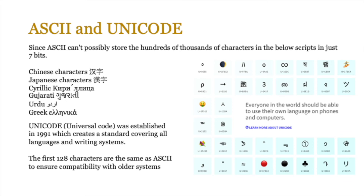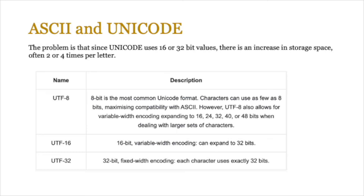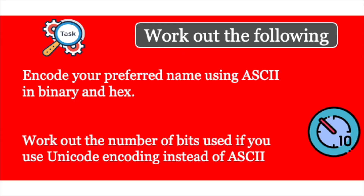ASCII had disadvantages: not all languages could be represented, and it doesn't support modern uses like emoji and icons. Unicode allows up to 65,000 character codes in its 16-bit version. However, Unicode itself has different versions: UTF-8 (8-bit), UTF-16 (16-bit), and UTF-32 (32-bit). This creates a problem — whereas ASCII represents the character 'A' in 7 bits, UTF-32 uses 32 bits for the same character, so Unicode file sizes tend to be much larger than ASCII ones.